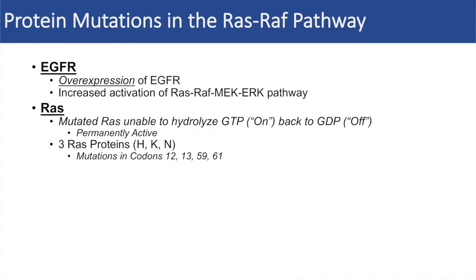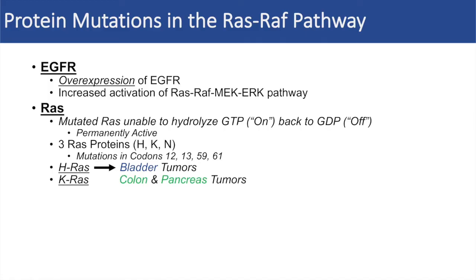The three RAS proteins are involved in different types of cancer. When HRAS is mutated, we're more likely to get bladder tumors. With colon and pancreas tumors, it is KRAS that is more likely to be mutated. And for hematopoietic tumors, it is more likely that NRAS is mutated.